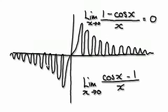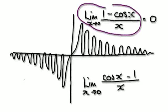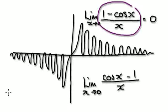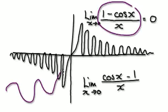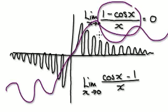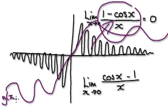The other important thing is: no matter what function you have, if you know the limit — if you know it crosses 0 — then the negative version of this function, suppose this is g(x), then minus g(x) — that's you reflecting it along the x-axis.